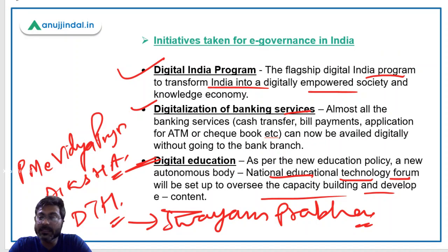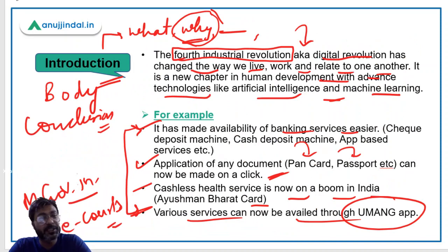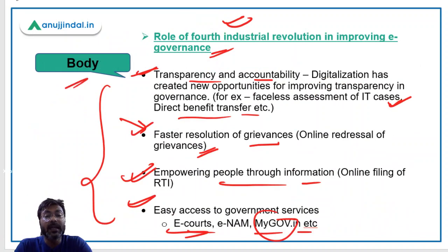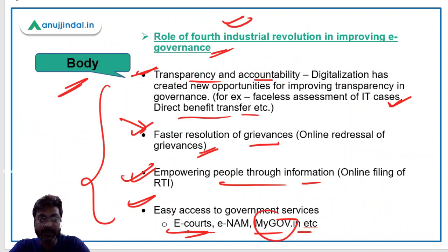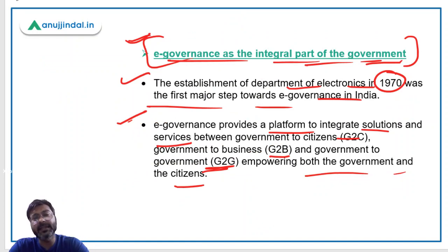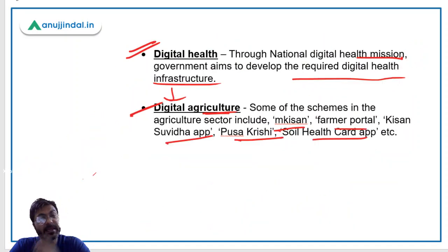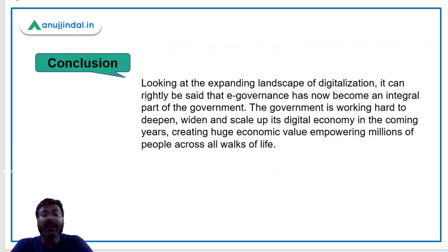So this is about the body — I hope it is clear with no confusion. First we talked about why digital revolution and how it is impacting our lives, then how the fourth industrial revolution is related to e-governance through those examples, then how e-governance is an integral part by providing information about government initiatives and other examples. This is how you can tell the examiner that e-governance has become integral to the government. Now let's move to the conclusion.